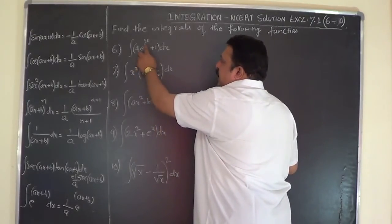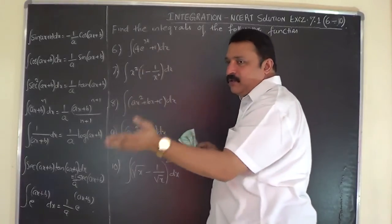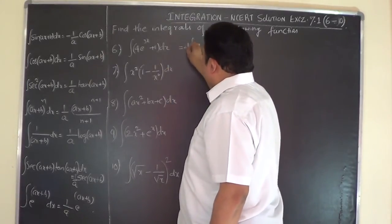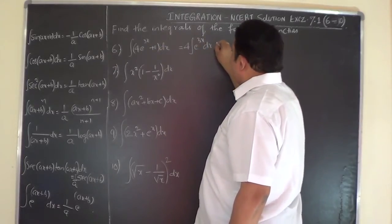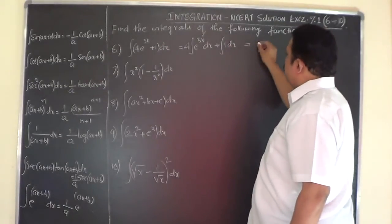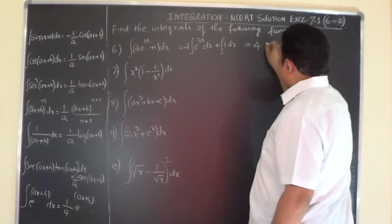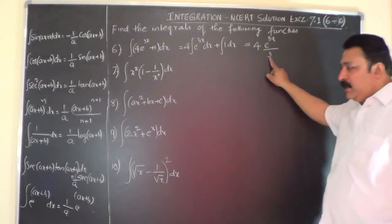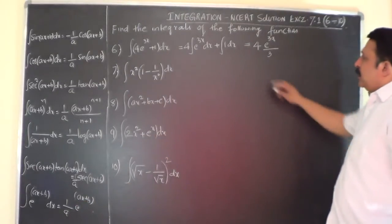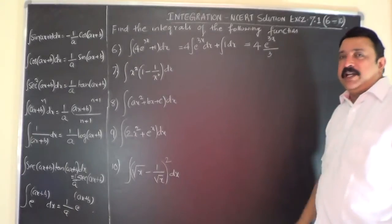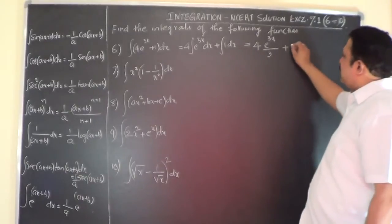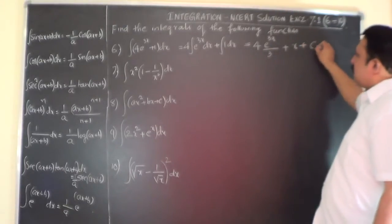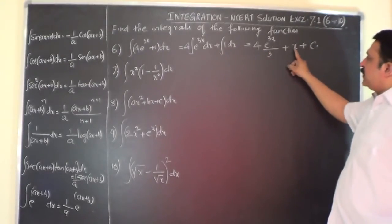When there are two functions — 4e^(3x) and 1 dx — you have to separate them. So this is: integral of 4, I can take outside the integral sign, e^(3x) dx plus integral 1 dx. That is equal to 4 as it is. If you integrate e^(3x), it is e^(3x) by 3. By this time you must be knowing why this 3 comes in the denominator — it is the 1/a factor. So integrating gives 4·e^(3x)/3 plus x plus C.